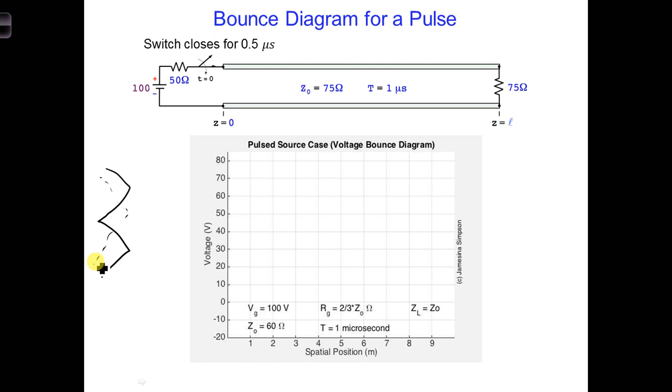Consider as an example a transmission line that is working well with no faults and with a load that is matched to the transmission line: ZRL 75 ohms equals Z naught 75 ohms. I have a movie for this case as well.